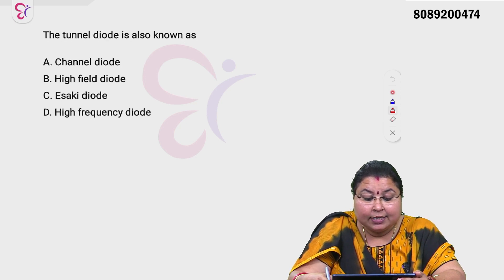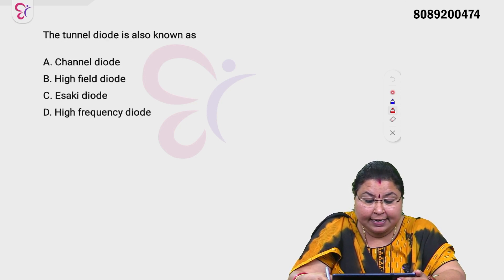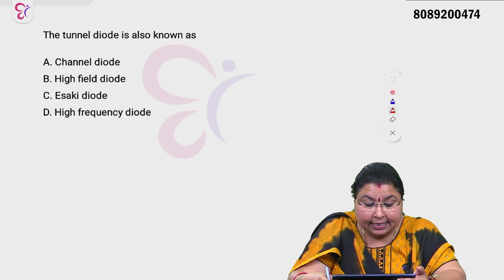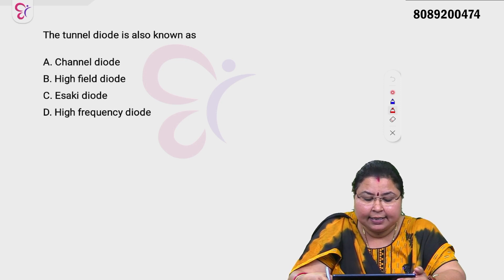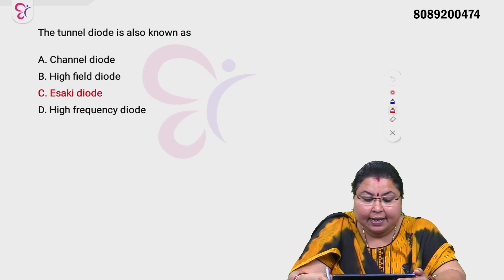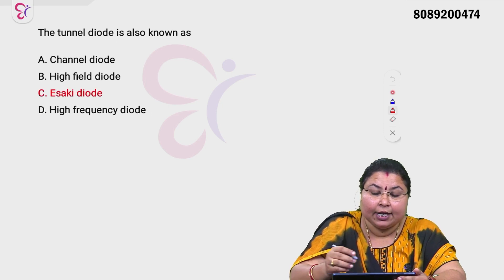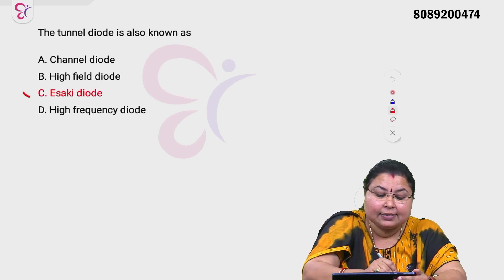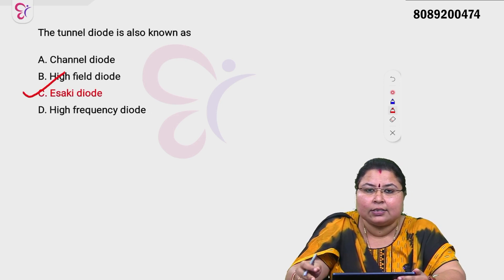The tunneling diode is also known as: Option A channel diode, Option B high field diode, Option C Esaki diode, Option D high frequency diode. The tunneling diode is also known as the Esaki diode — Option C is the correct answer.